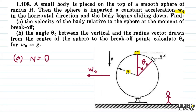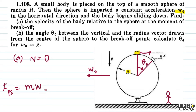Now, if we talk about a frame which is accelerated with respect to the ground, we need to apply a pseudo force. The magnitude of this pseudo force is mass of the body multiplied by the acceleration of the frame, that is w0, and its direction is opposite to the direction of acceleration.